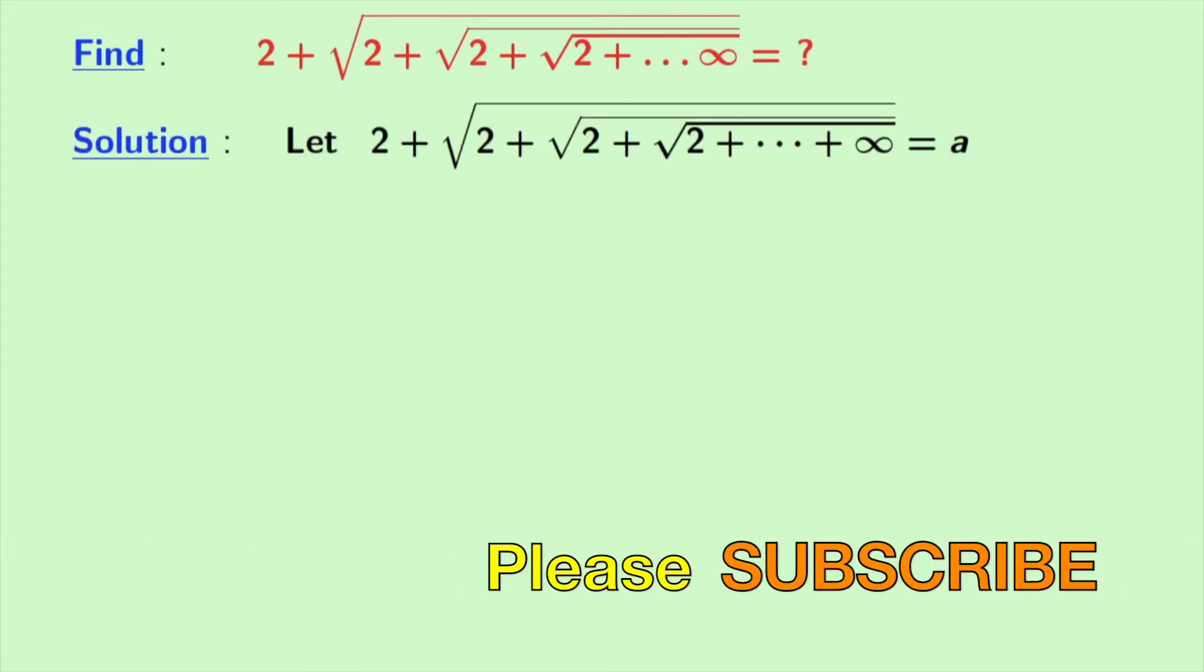At first, we will assume the value of the given expression is a. Look that the expression inside this big square root is also a. So rewriting this, we get 2 plus root a is equal to a.